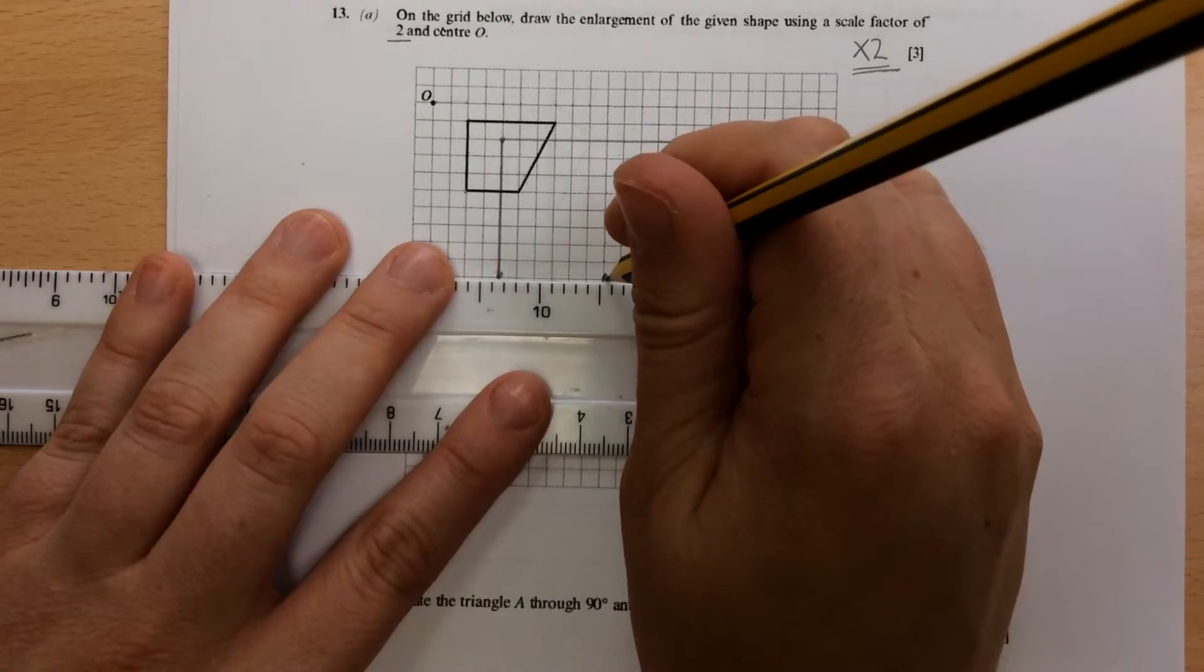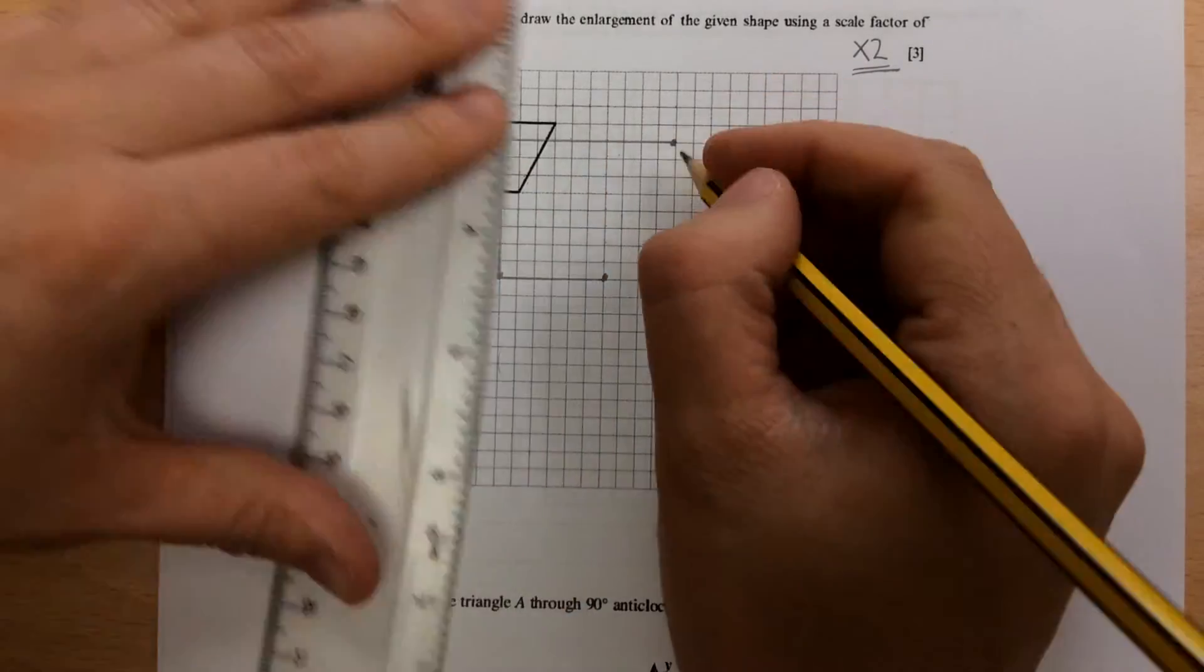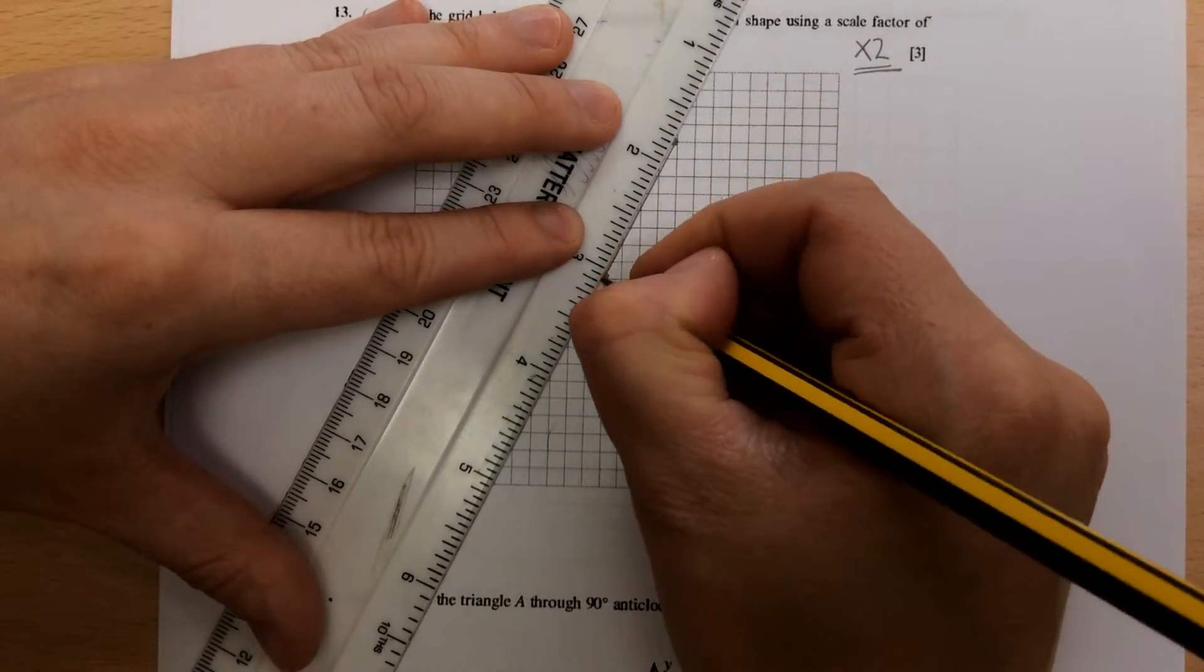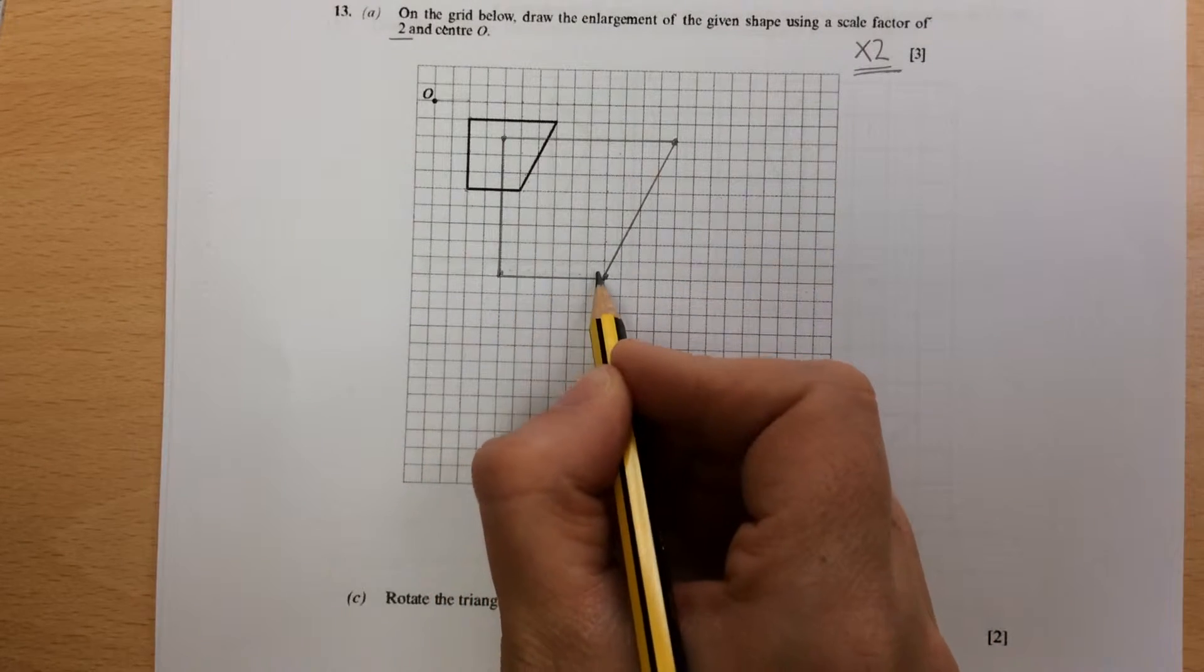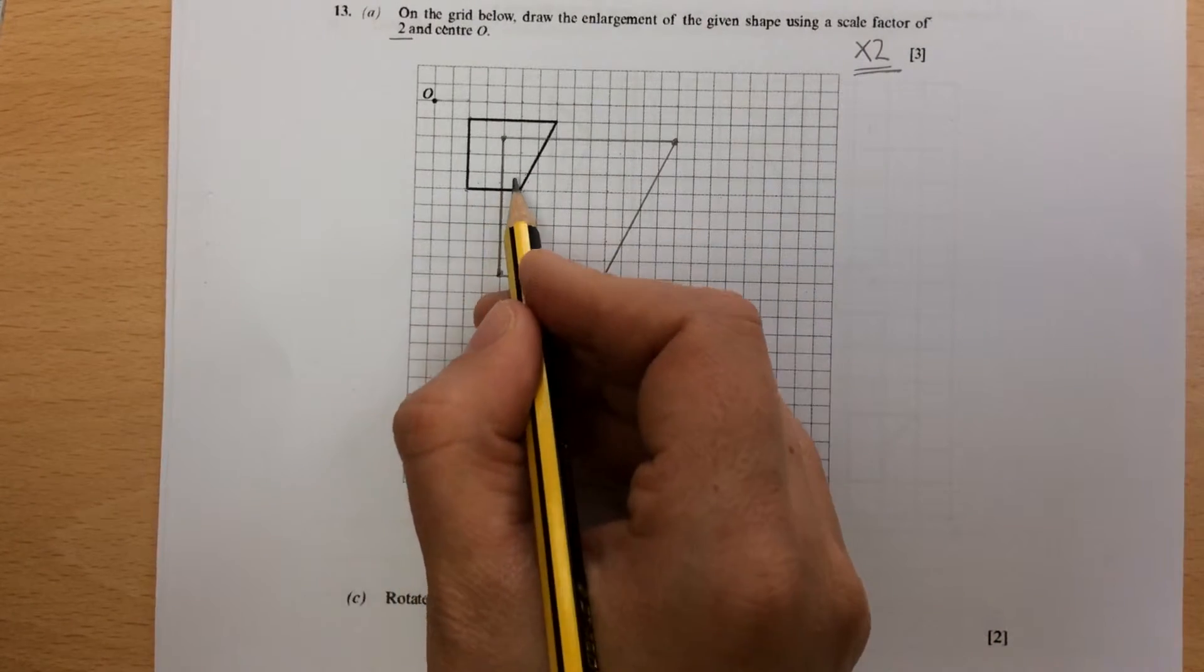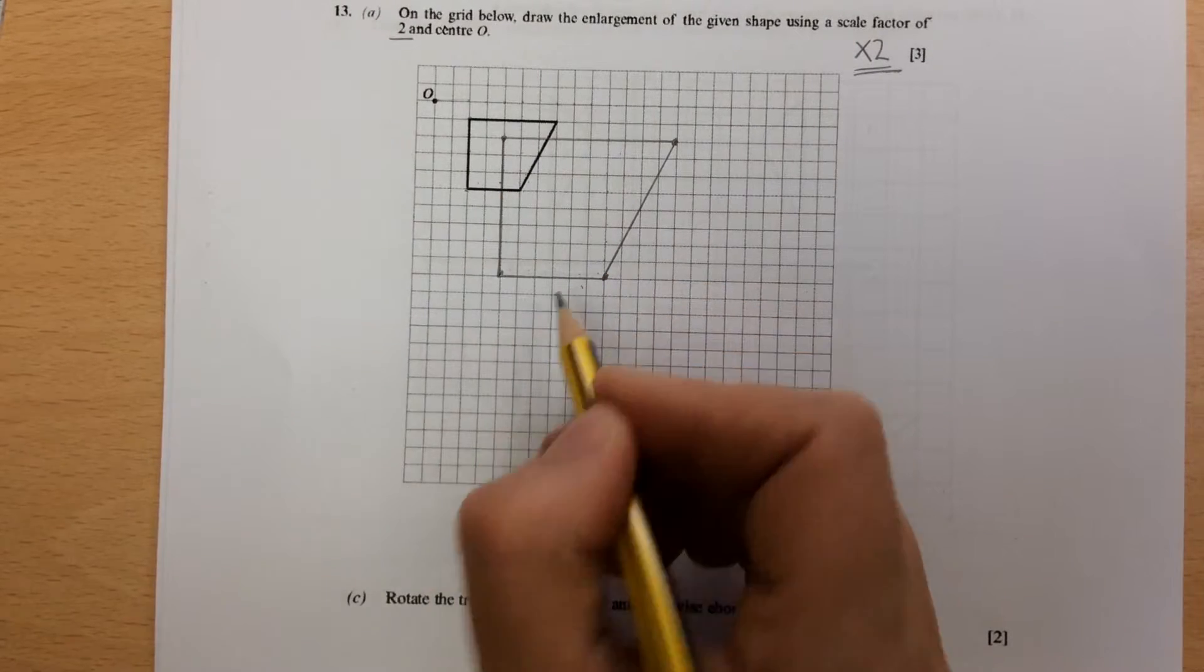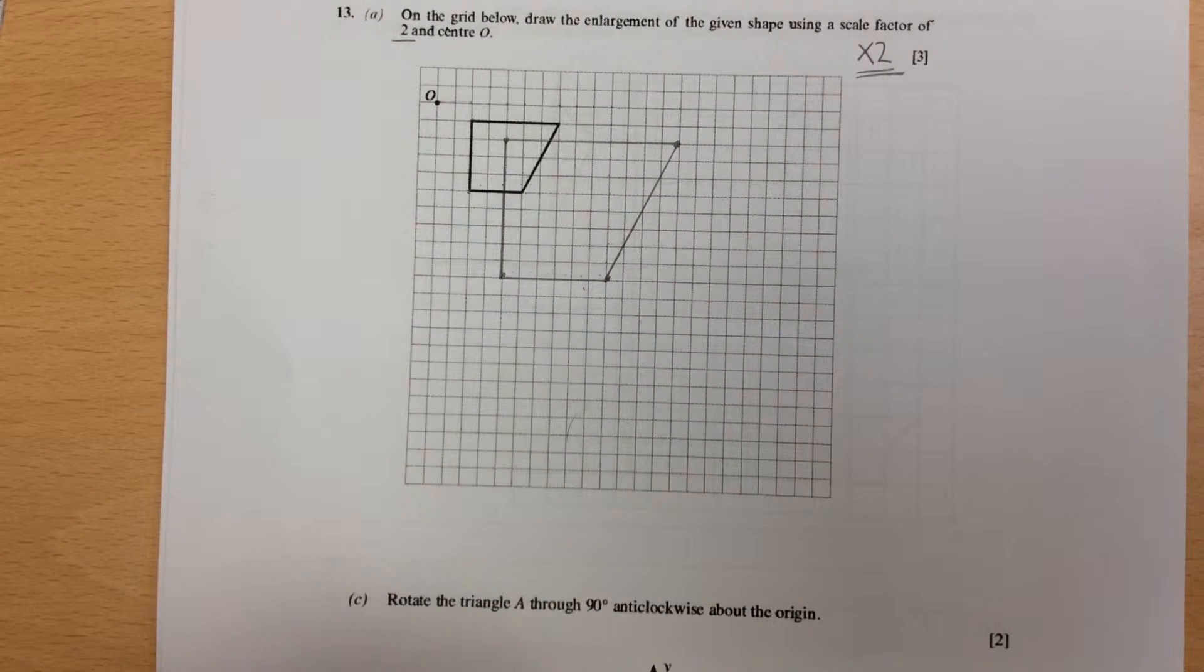And the last point of the shape. And draw it. Double check. 1, 2, 3, 4, 5, 6 across. And it was 1, 2, 3. So 3 times 2 gives you 6. So double check your answer.